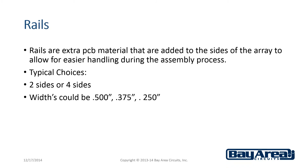First, let's talk about rails. Rails are extra PCB material that are added to the sides of the array to allow for easier handling during the assembly process. The typical choices are either two or four sides of the array. The widths may also vary between 0.500 inches, 0.375 inches, and 0.250 inches. Here's an example of a two-up array with 0.500 inch rails on two sides.